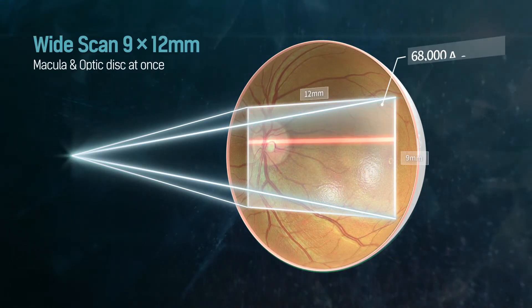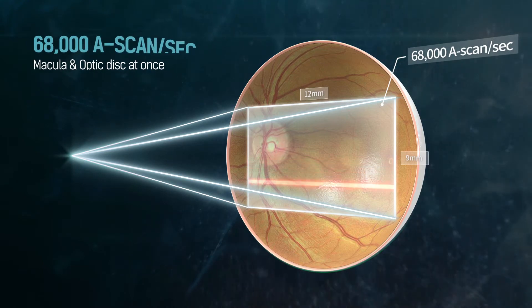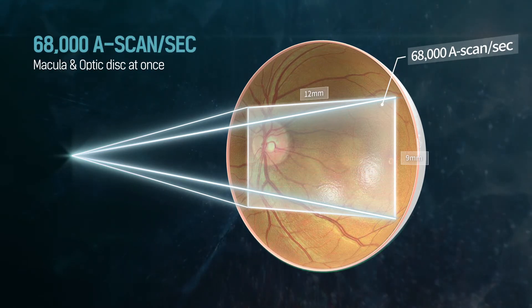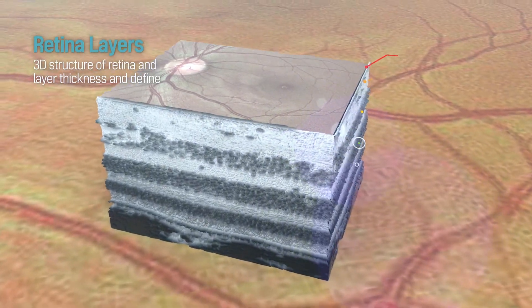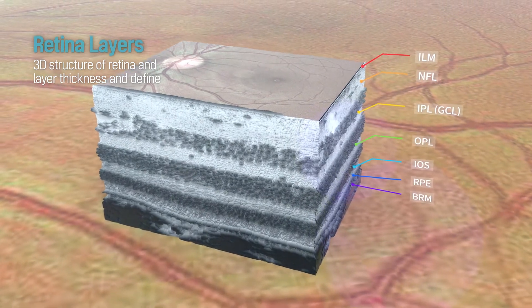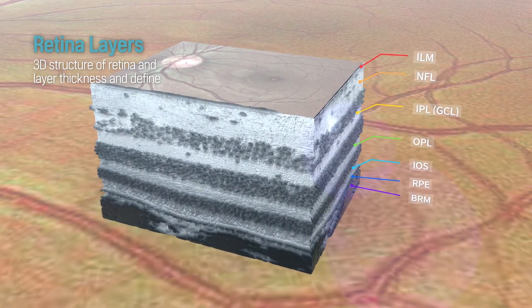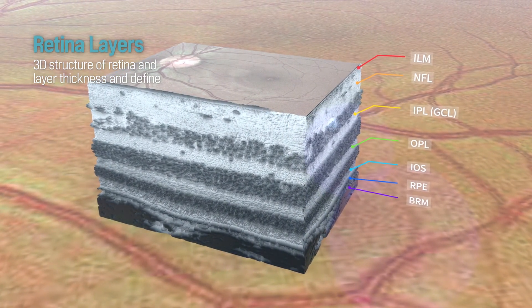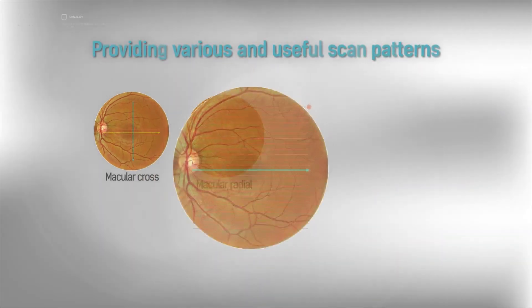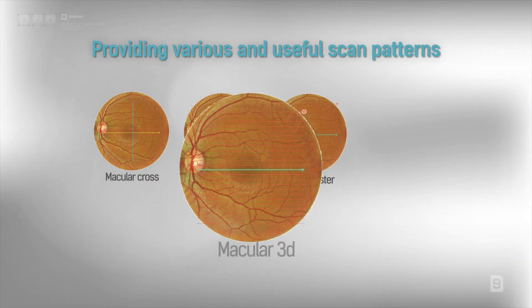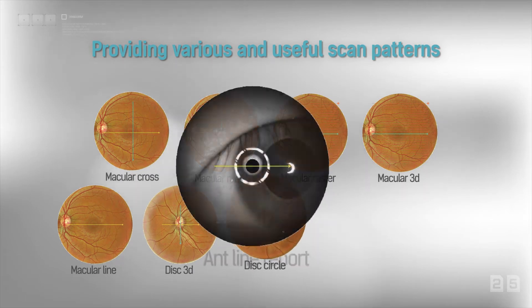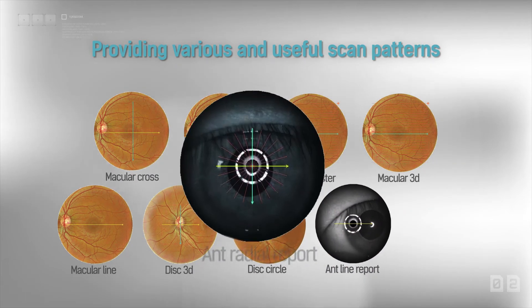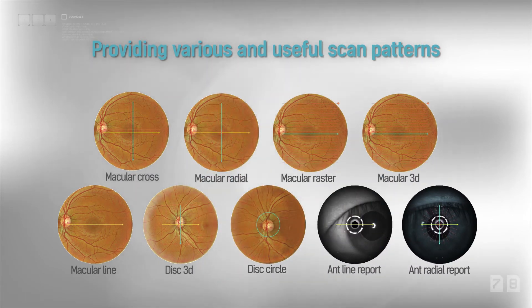By one fast scan, it measures macular and optic disc at once for efficient diagnosis. By providing a variety of scan patterns, you can get the best results by choosing the right pattern for your retina disease.